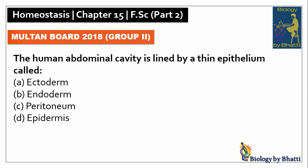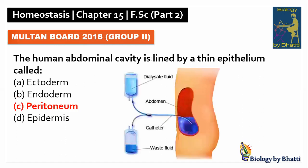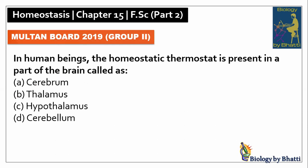Multan Board 2018 Group 2: the human abdominal cavity is lined by a thin epithelium called peritoneum, so the answer was C option. In human beings, the homeostatic thermostat is present in a part of the brain called the hypothalamus, so the answer was C option.